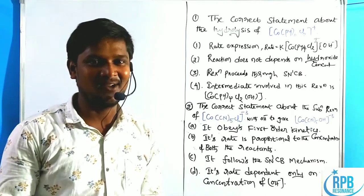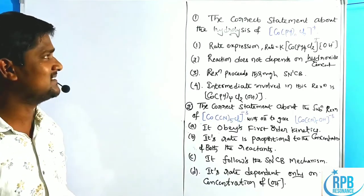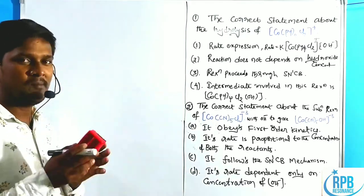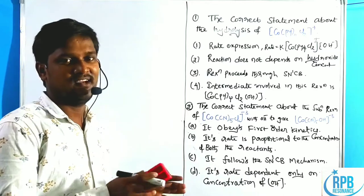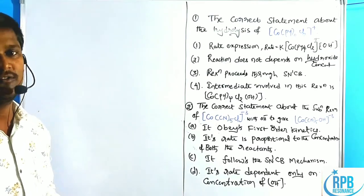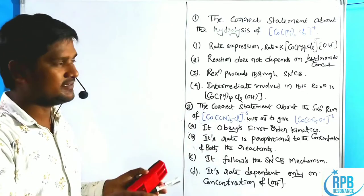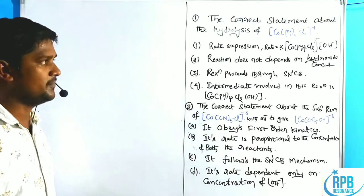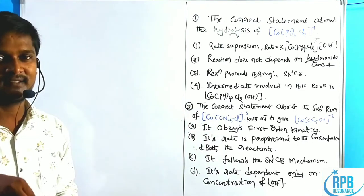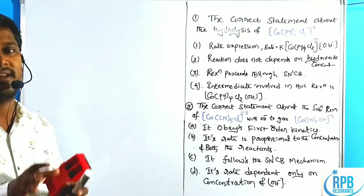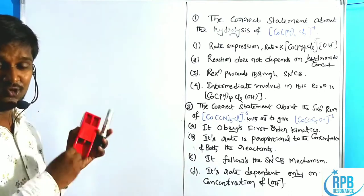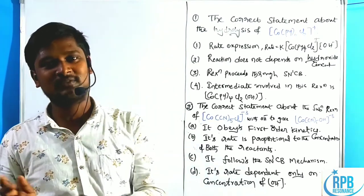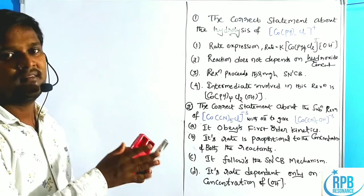Hi everyone, welcome to RP Resonance Chemistry. We have discussed our favorite topic, coordination chemistry. In this session, we are discussing a problem-solving session on acid hydrolysis, base hydrolysis, and conjugate base hydrolysis — overall named as hydrolysis of coordination complexes through the dissociative mechanism. We are discussing several CSIR and GATE questions, which carry four marks for CSIR and two marks for GATE. This is a common question every year for CSIR.